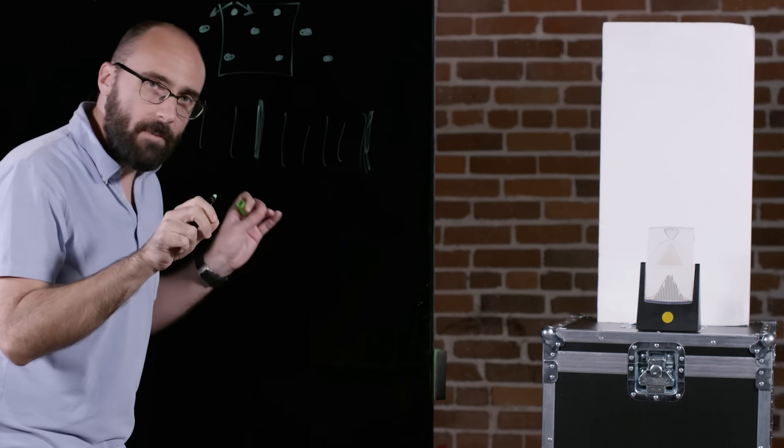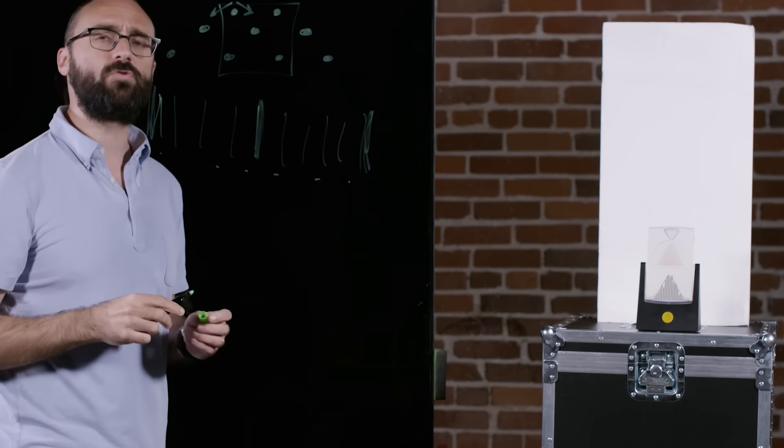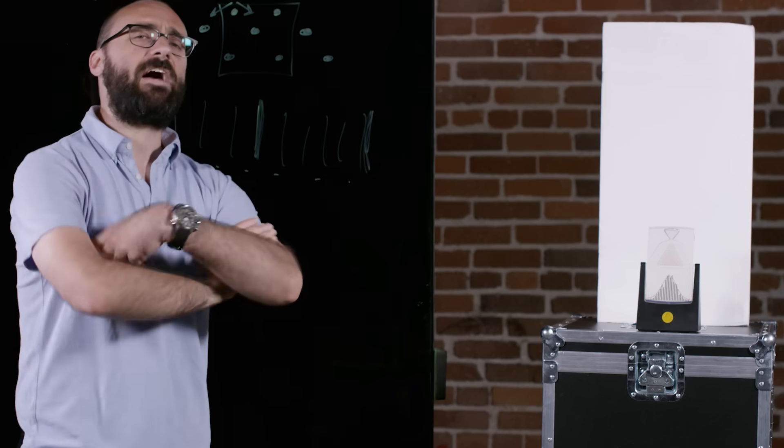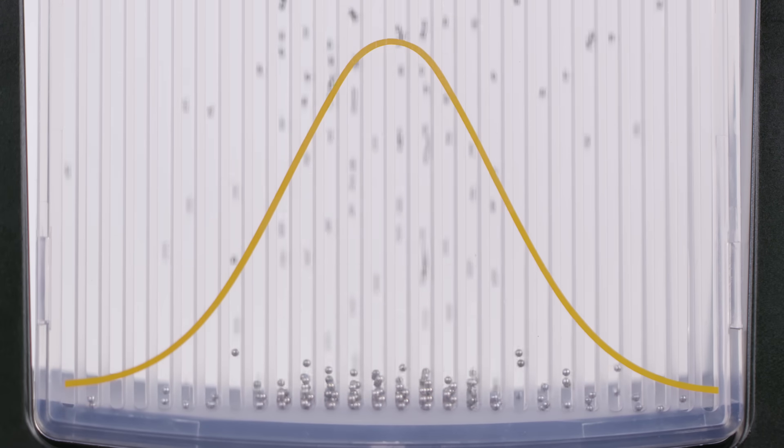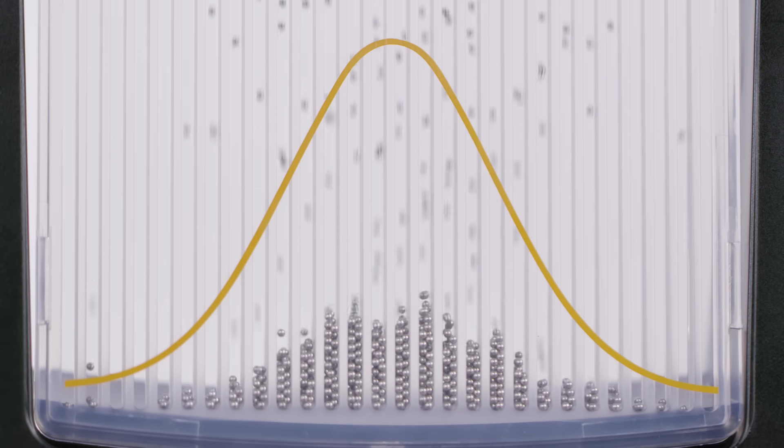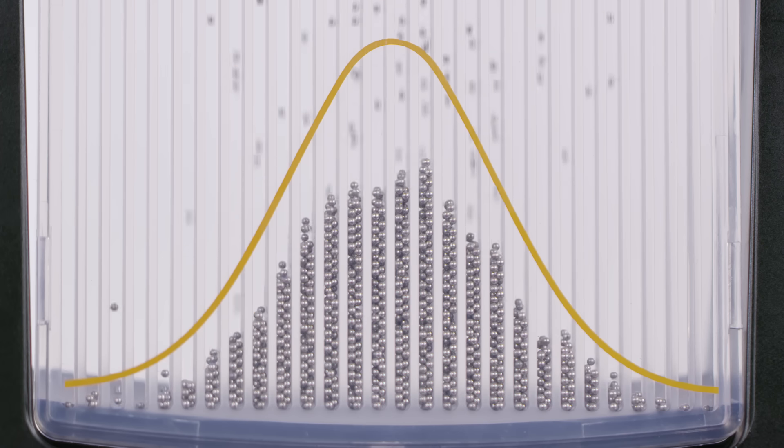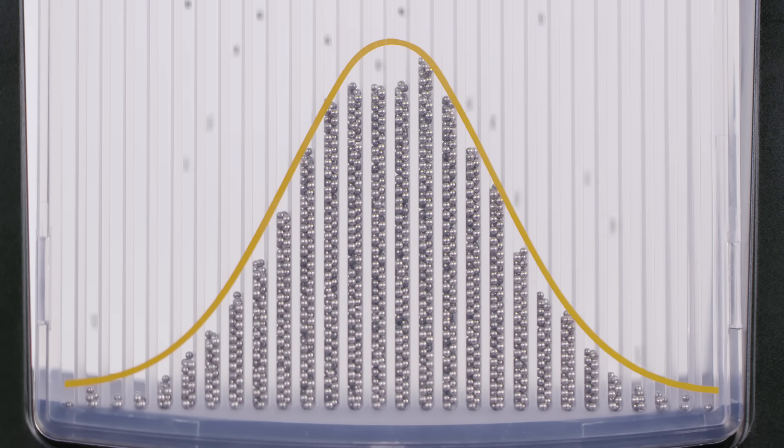Now the actual probability that an individual ball will fall into any one of these slots follows what is called a binomial distribution. But there's a nice thing in mathematics called the central limit theorem which tells us that under a large number of trials with a large number of objects like 3,000 balls, a binomial distribution approximates a normal distribution.